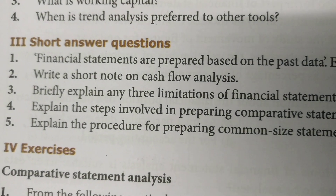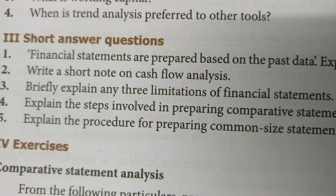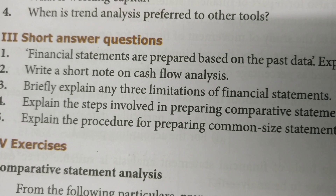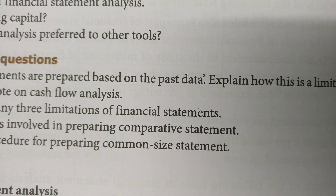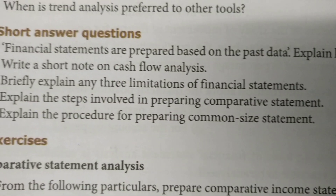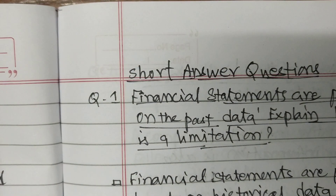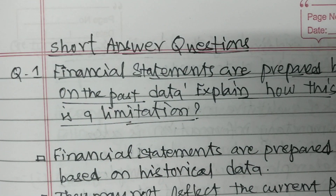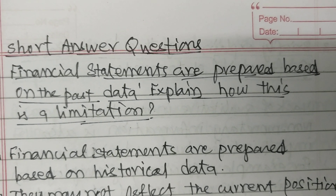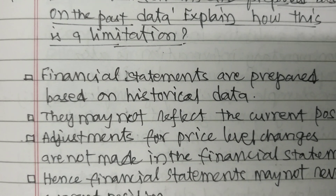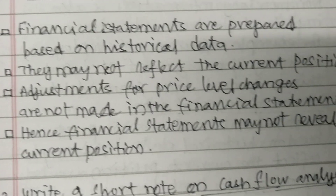There are 5 questions in your book. Financial Statements are prepared based on the past data. Explain how this is a limitation. Financial Statements are prepared based on the historical data. They may not reflect the current position.